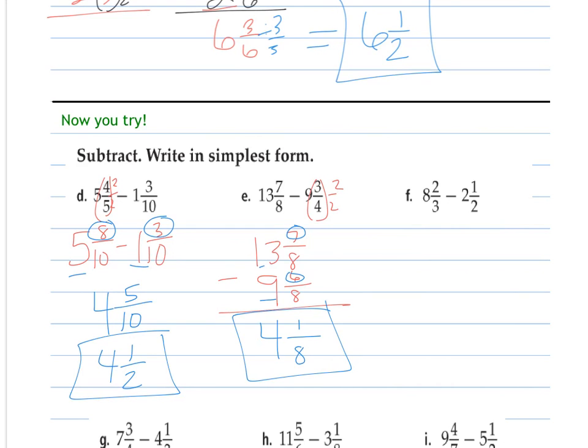I need common denominators here. In this case, I have to change both of them, because these are prime. So I'm going to change them to a least common denominator of 6, changing this by a factor of 2, and this one by 3. So I get 8 and 4 sixths, minus 2 and 3 sixths. Taking my numerators, taking my whole numbers.